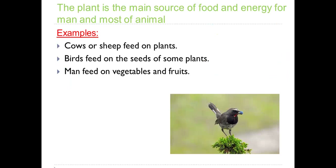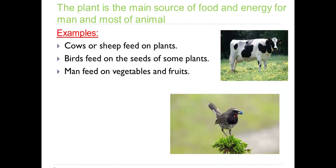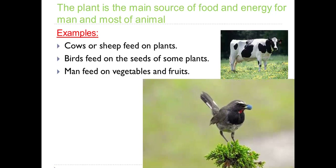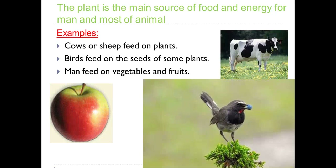The plant is the main source of food and energy for men and most animals. For example, cows or sheep feed on plants. Many animals feed on plants. Birds feed on seeds of some plants. And men also feed on vegetables and fruits. So, all living organisms depend on plants to get their food.